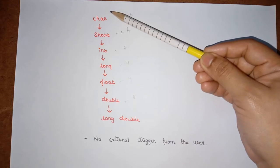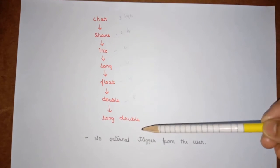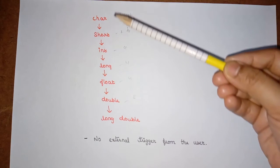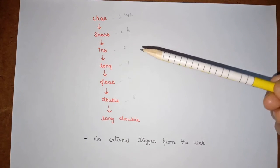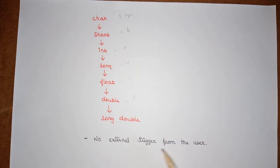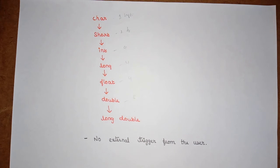So when we want to convert a character into short, integer, long, float, double, or long double, it is called an implicit type conversion, because the lowest data type is converted into a higher data type by the compiler on its own, without the involvement of any user — there is no external trigger from the user for this conversion. This happens automatically by the compiler when it is necessary; it won't always happen, it happens only when necessary.